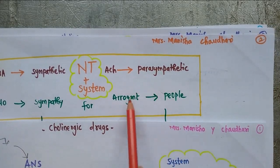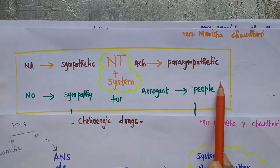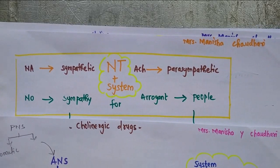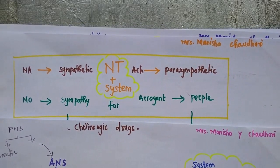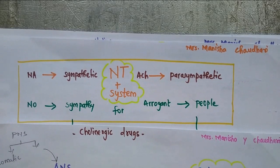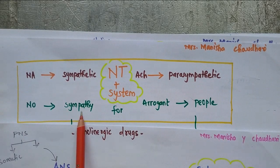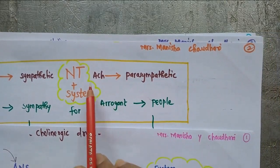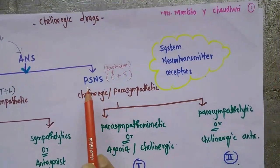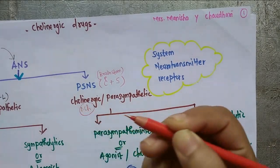People stands for parasympathetic, and arrogant stands for acetylcholine. So why is this trick needed? Because many times, even after completing the topic, we don't remember which neurotransmitter is involved in which system and we are not able to answer correctly. From this trick you will remember: noradrenaline in sympathetic system, and acetylcholine in parasympathetic system. Parasympathetic is also known as cholinergic since the neurotransmitter involved is acetylcholine.